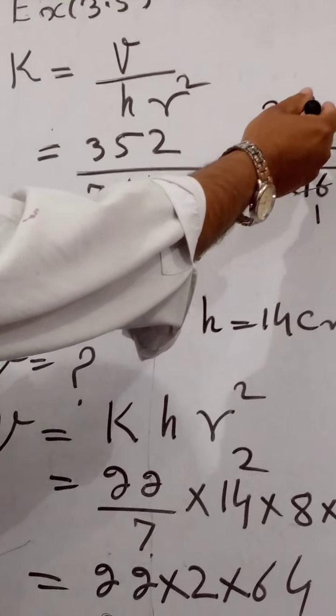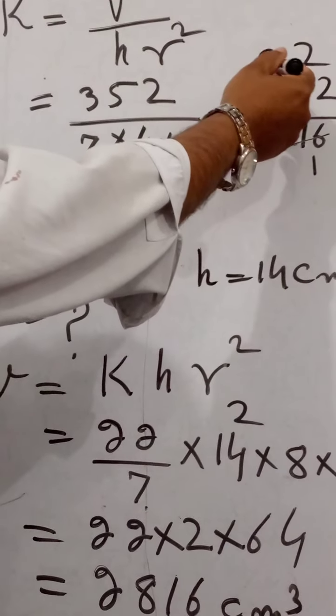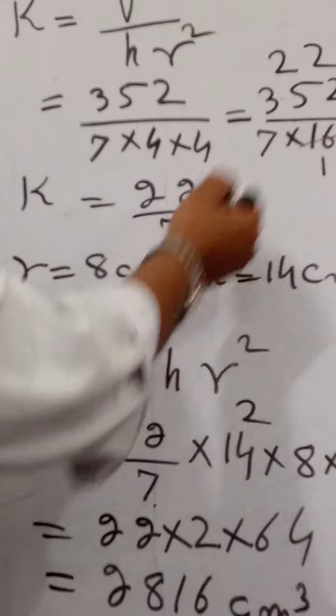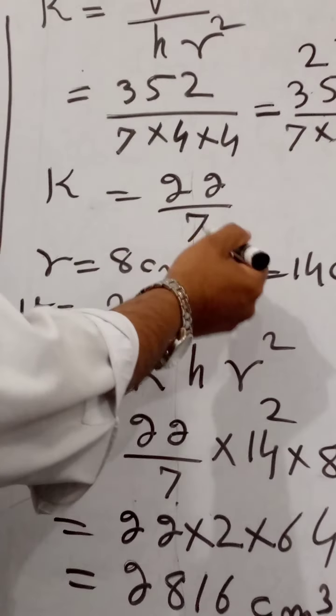Here, 22, from this, we find K is equal to 22 divided by 7.